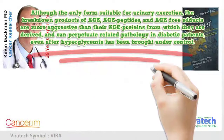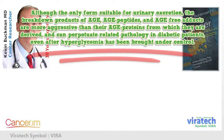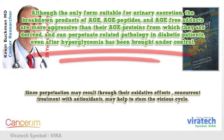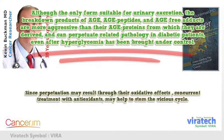Although the only form suitable for urinary excretion, the breakdown products of AGEs — AGE peptides and AGE free adducts — are more aggressive than the AGE proteins from which they are derived, and can perpetuate related pathology in diabetic patients even after hyperglycemia has been brought under control. Since perpetuation may result through their oxidative effects, concurrent treatment with antioxidants may help to stem the vicious cycle.